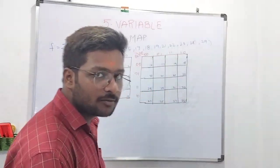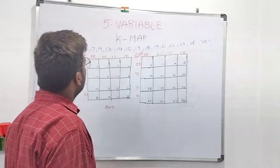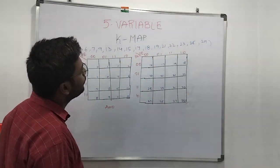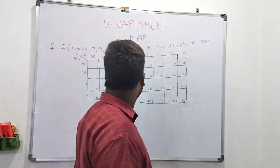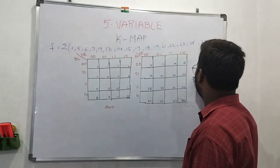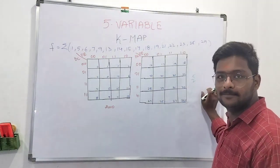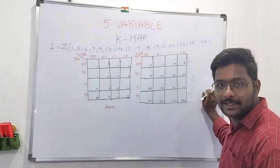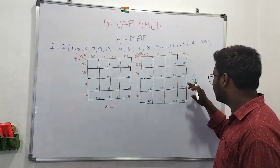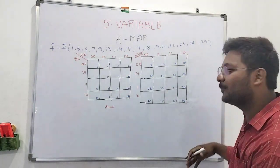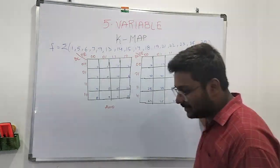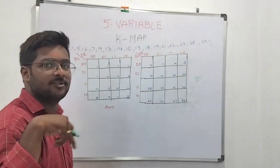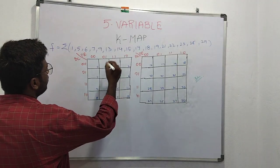Hi guys, welcome to my channel Engineers Choice. Today we go into the topic of the five-variable K-map series. For five variables, we have 2 to the power of 5, which is 32 variables. So these questions have 32 minterms, numbered 0 to 31.